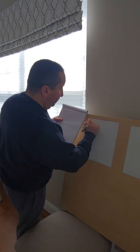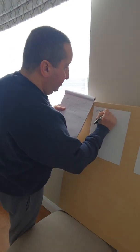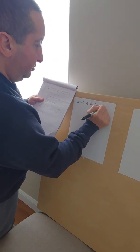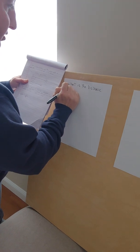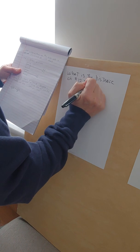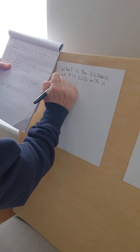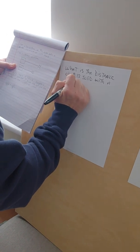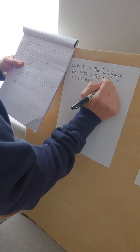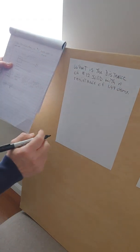The question is: what is the distance of a number 12 solid with a resistance of 1.4 ohms?